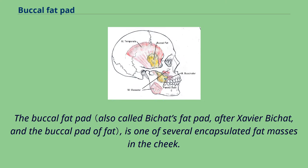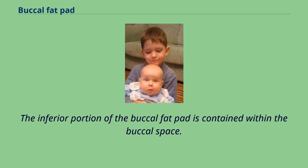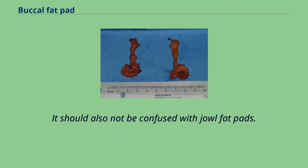The buccal fat pad is one of several encapsulated fat masses in the cheek. It is a deep fat pad located on either side of the face between the buccinator muscle and several more superficial muscles. The inferior portion of the buccal fat pad is contained within the buccal space. It should not be confused with the malar fat pad, which is directly below the skin of the cheek, nor should it be confused with jowl fat pads.